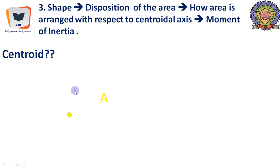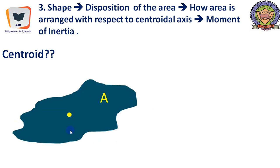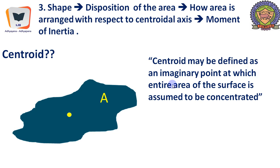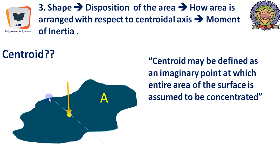Centroid may be defined as an imaginary point at which the entire area of the surface is assumed to be concentrated — acting like a force. When we locate the centroid and assume the entire area passes through that point, the shape of the area no longer matters. The entire area is assumed to be acting just like a weight. The beauty of the centroidal axis is that the moment of the area above it balances the moment of the area below it.